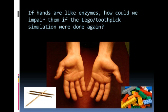So if hands are like enzymes, how could we impair them if the toothpick lab or the Lego lab were done again? In one instance, you could put oven mitts on and make it difficult for your fingers to sort of nimbly grab hold of either of those substrates. You could ice your hands and your fingers would be more numb, so it would take you longer to do that job. We could do the very same thing to enzymes. So understand that you can affect the rate of reaction of an enzyme by changing things like temperature and pH and salinity.